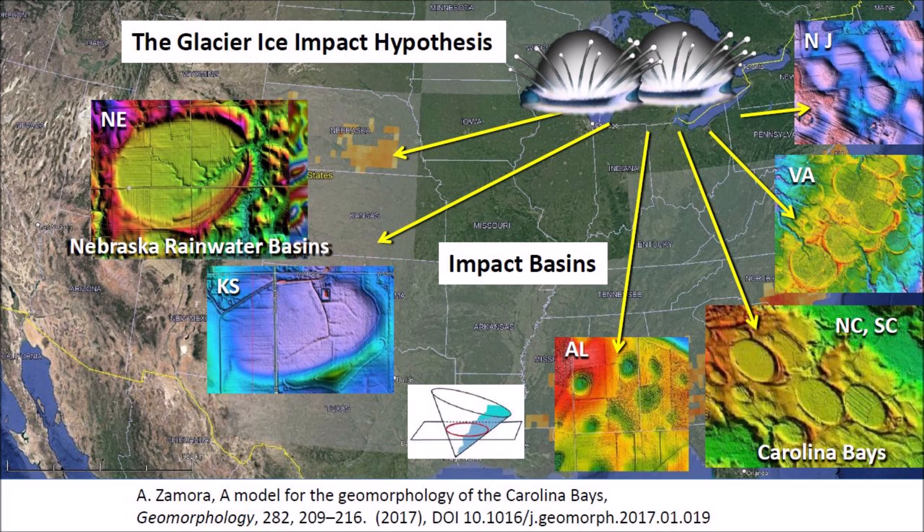The secondary impacts caused seismic vibrations that liquefied unconsolidated ground and produced inclined conical cavities that became shallow elliptical basins by viscous relaxation.